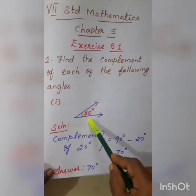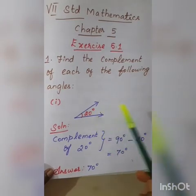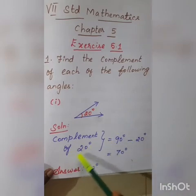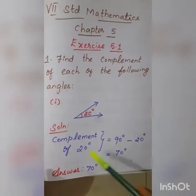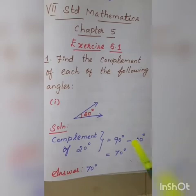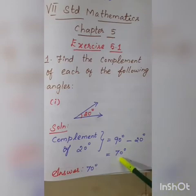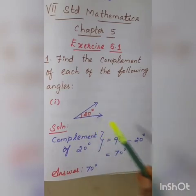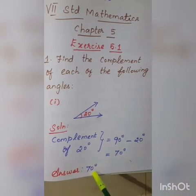One angle is given, so we find out the other angle. The complement of 20 degrees equals 90 degrees minus 20 degrees. The answer is 70 degrees. So 70 plus 20 degrees is 90 degrees. Therefore, 70 degrees is the complement of the angle 20 degrees.